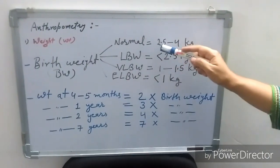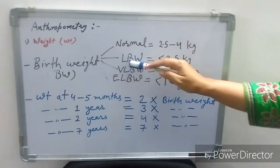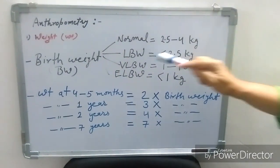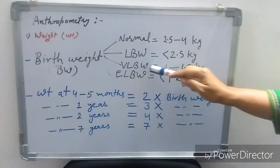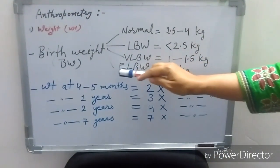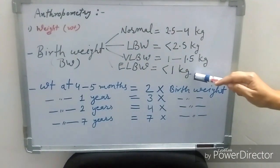Normal birth weight is between 2.5 to 4 kg. We will label low birth weight (LBW) if birth weight is less than 2.5 kilogram, very low birth weight (VLBW) if weight is between 1 to 1.5 kilogram, and extremely low birth weight (ELBW) if weight is less than 1 kilogram.